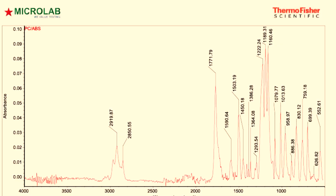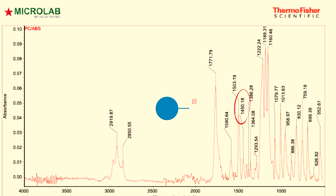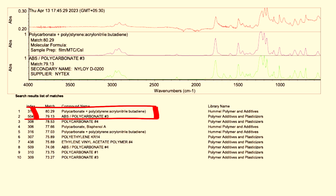The next sample was taken from the body of a printer. The FTIR spectrum shows a major peak at 1771 per centimeter, which is characteristic of polycarbonate, and a major peak at 1450 per centimeter characteristic of butadiene. Pairing this with the library, we get an 80% match with PC-ABS.